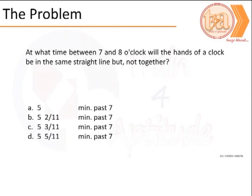The problem is to find the time between 7 and 8 o'clock when both hands of the clock are in the same straight line but not together. We have options: 5 minutes past 7, 5 and 2/11 minutes past 7, 5 and 3/11 minutes past 7, and 5 and 5/11 minutes past 7.